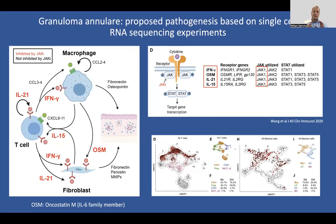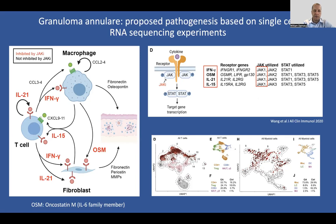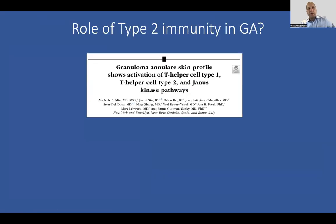We did single-cell RNA sequencing and came up with a model based on which cytokines each cell was producing and responding to. Looking at the upper right-hand corner — really the interesting part is that all of these cytokines signal, at least in part, through JAK1, suggesting that JAK1 may be the key JAK protein in granuloma annulare disorder.